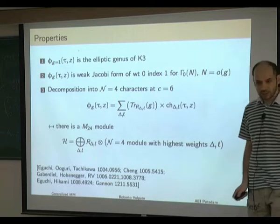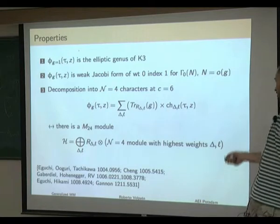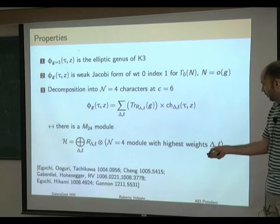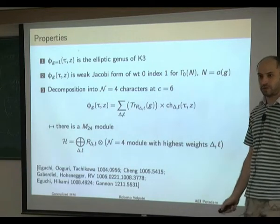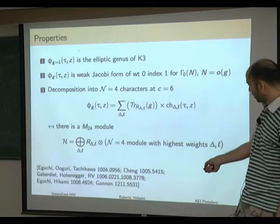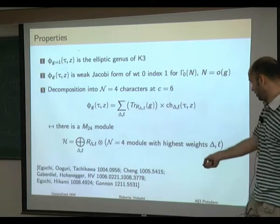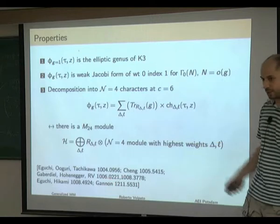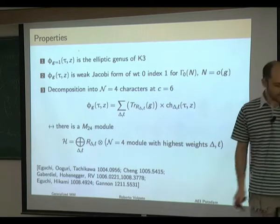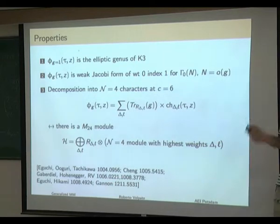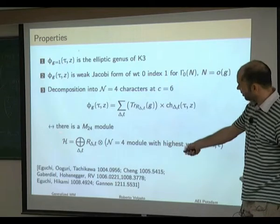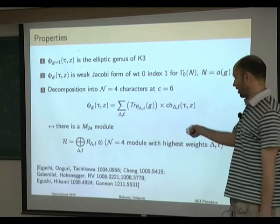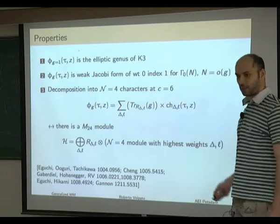This is a result of work by various people, starting from the initial observation of Eguchi-Ooguri-Tachikawa, up to the proof by Gannon that this module exists. The basic question is: what does this space represent, and why are these characters modular?